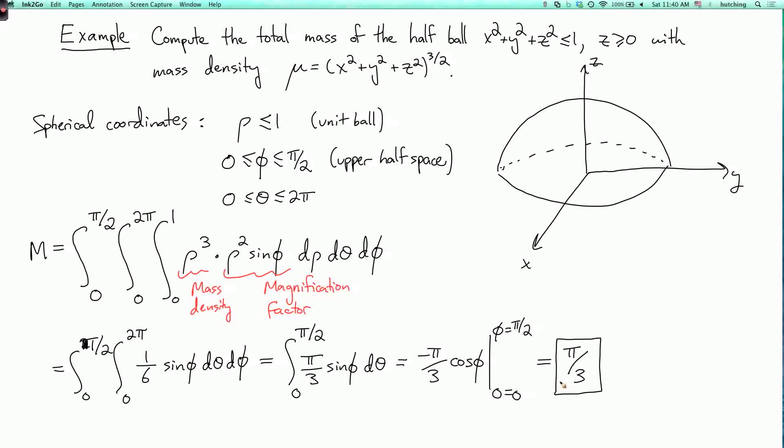And as a reality check, I have the positive mass density, so I should be getting a positive total mass. So that's good. And you could also do this in Cartesian coordinates, but it would be considerably messier.